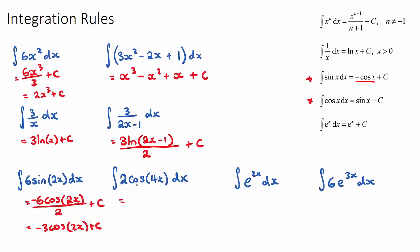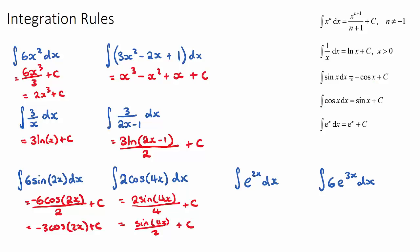For a cosine function, cosine integrates to positive sine. So we have 2 times positive sine, the bracket 4x stays the same, the derivative of what was inside the bracket — the 4 — goes on the bottom, plus c. This simplifies to sine(4x) over 2 plus c.